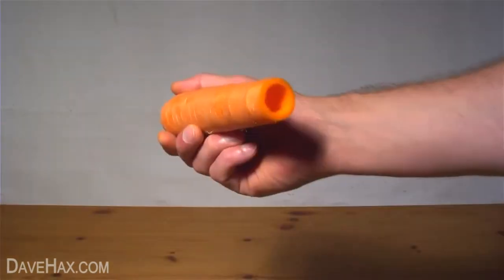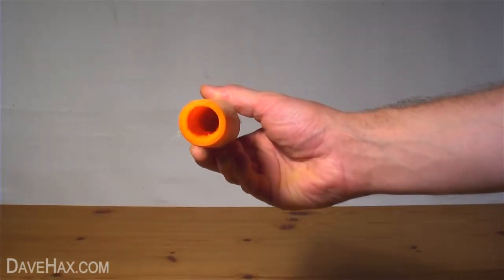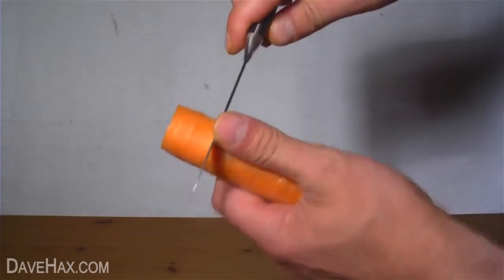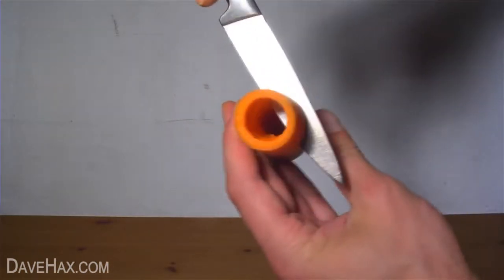Clean all the debris out, you can wash it under the tap if you need to, then take a sharp knife and make a cut about an inch down from the top, roughly a centimeter deep.